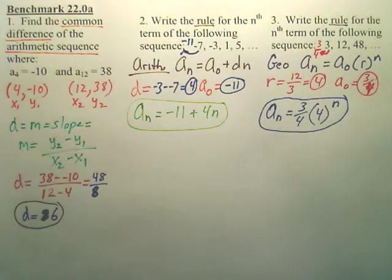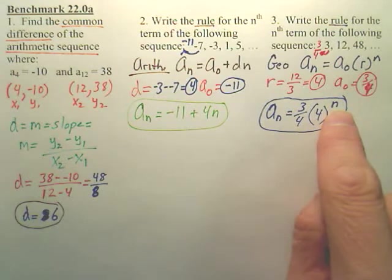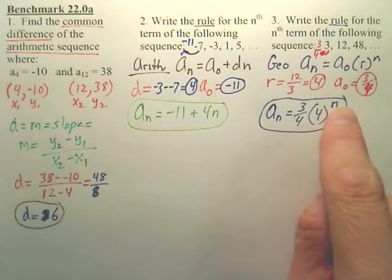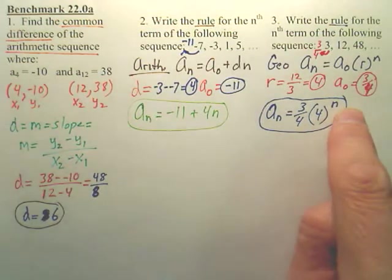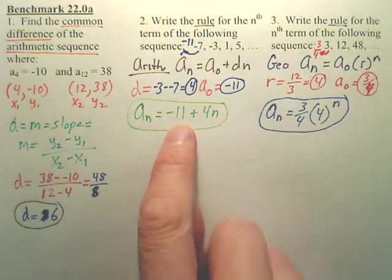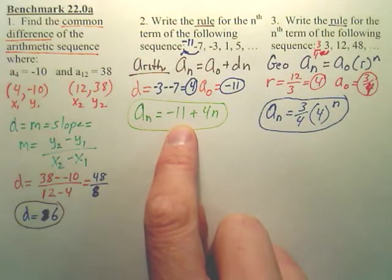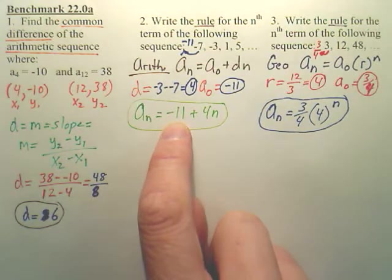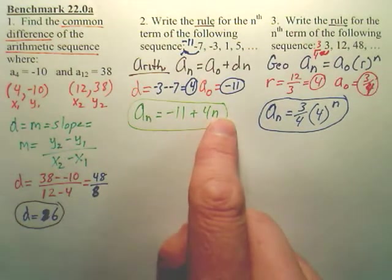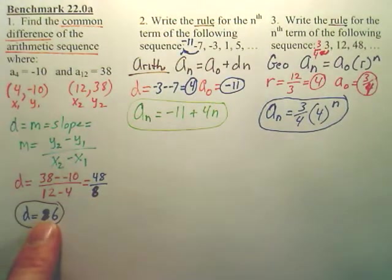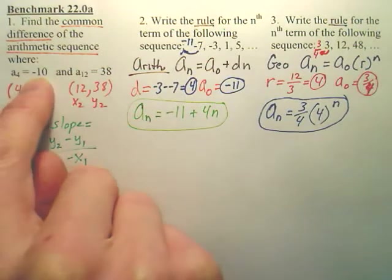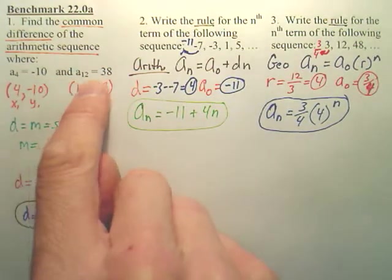Now what does this formula mean? Well, if you want the fifth term of the sequence, you plug in 5. Meaning, you start with 3 fourths, and you're going to multiply by 4 five times. What this one means, if I want my eighth term, I start with negative 11, and I'm going to add 4 eight times. That's what these rules mean. The common difference here in the first one is telling you what you added each time to start with the fourth term of negative 10 to get to my twelfth term of 38.